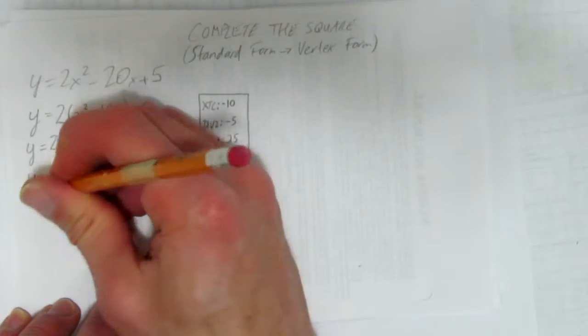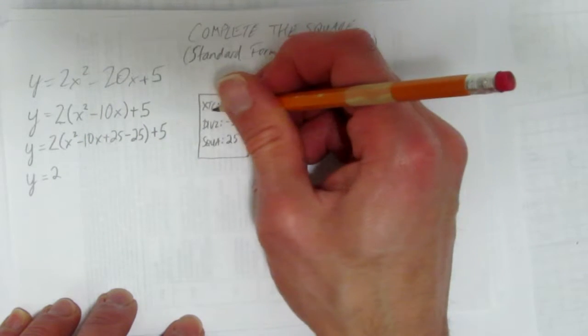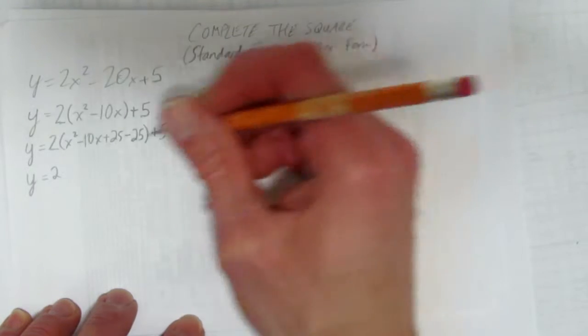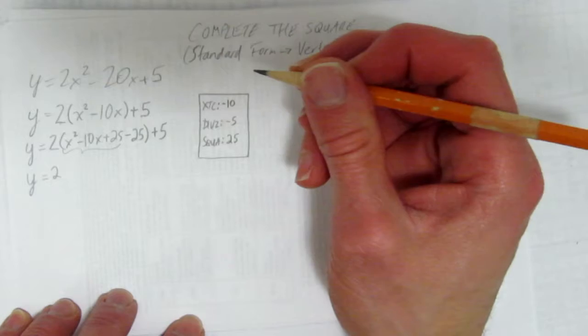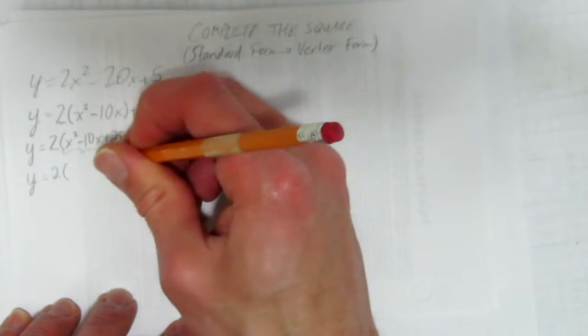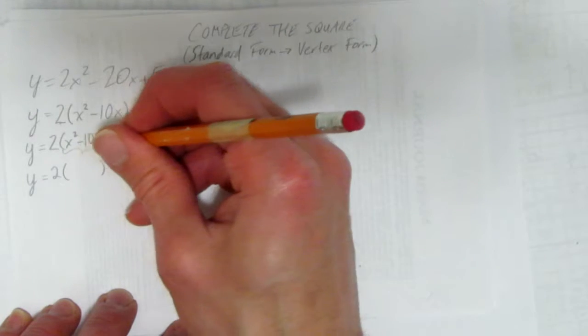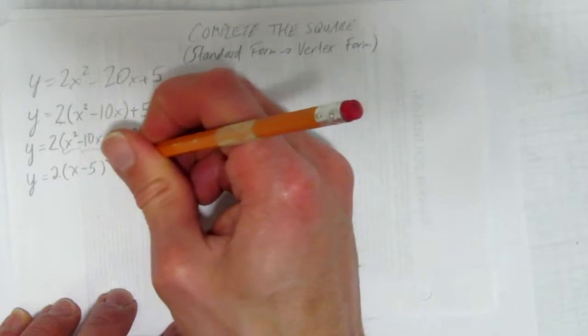Third step. The third step is, if you've done this x-term coefficient, the xTC, divided it by 2 and squared it, these first three terms will make a perfect square. And that perfect square is going to be made up of whatever this div 2 is. That is, these three things are equal to x minus 5 squared.